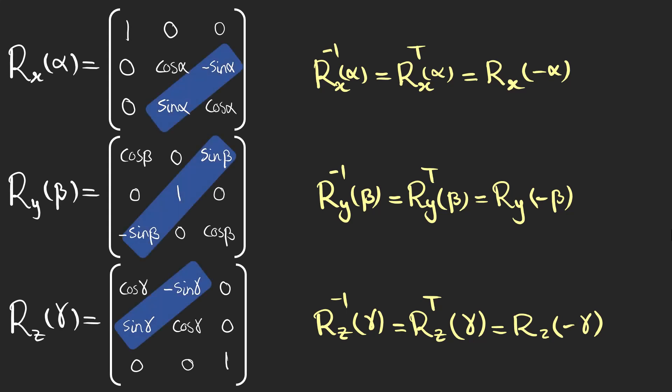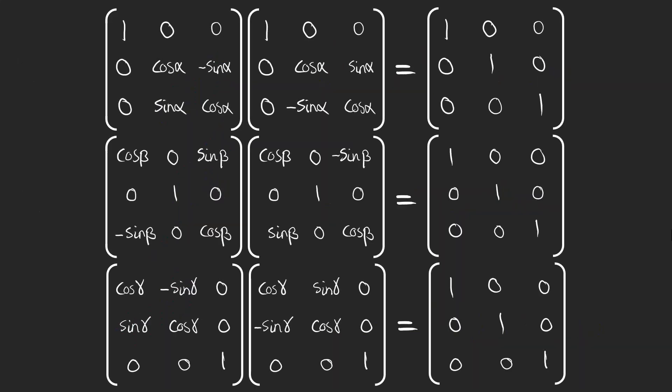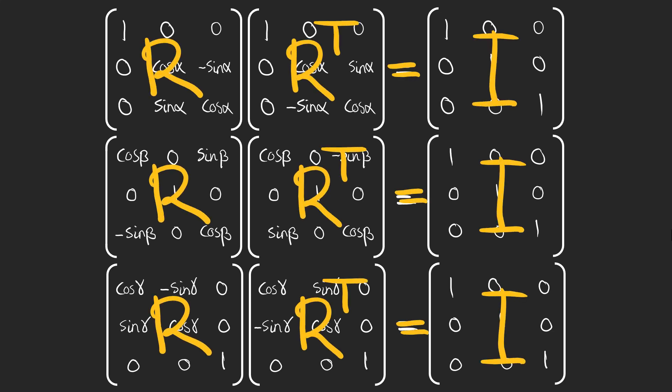If you change the angle to the opposite, cosine remains the same but the sine function changes sign and the inverse becomes the transpose. So by multiplying these matrices with their transpose, we get the identity matrix. That shows the transpose is the inverse.